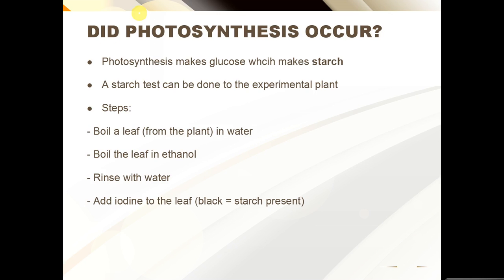Before anything else, if you wanted to determine whether a plant went through photosynthesis, how would you test for it? We talked about the fact that glucose is made in photosynthesis and that glucose makes starch. Starch is how plants store their glucose or sugar, and it's stored in the leaves. So to determine whether a plant did photosynthesis, you test for starch in the leaves — given that you de-starched the plant beforehand.